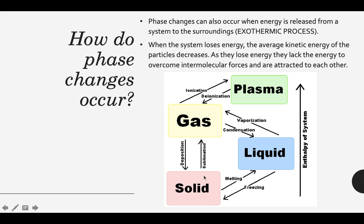We can see in this diagram that there are phase changes between all of the different phases of matter. When a solid increases in enthalpy, it becomes a liquid — that process is known as melting. When the liquid decreases in enthalpy and loses energy, it becomes a solid. Similarly, whenever a liquid increases in enthalpy, it becomes a gas — that's vaporization. Whenever the gas decreases in enthalpy, it becomes a liquid — that's condensation.